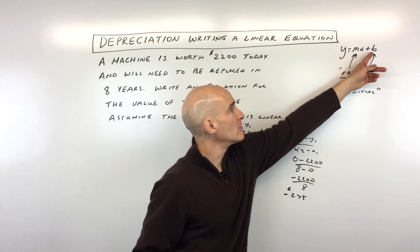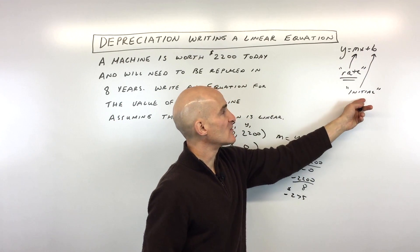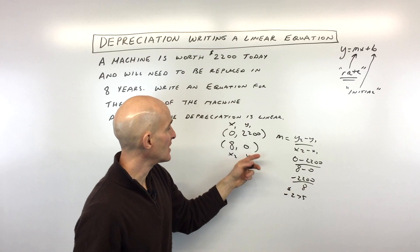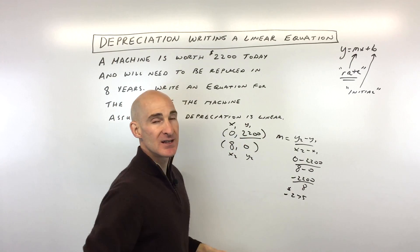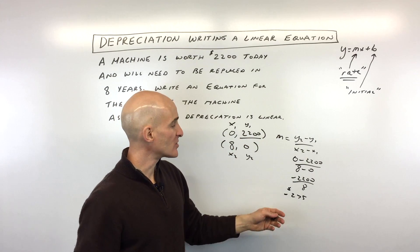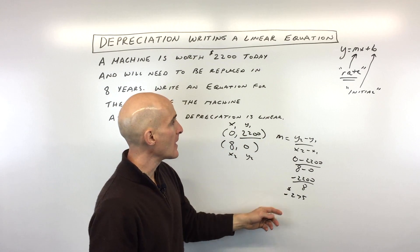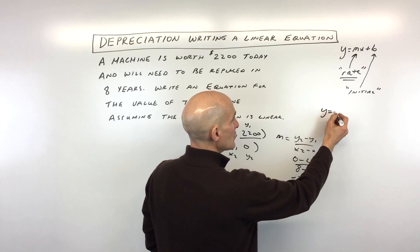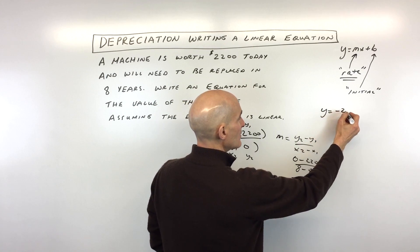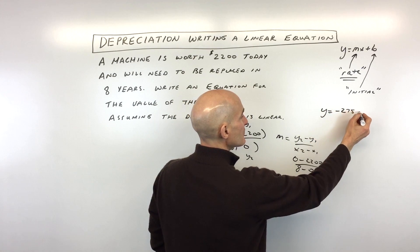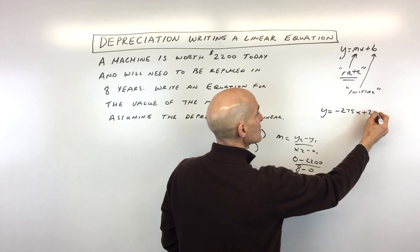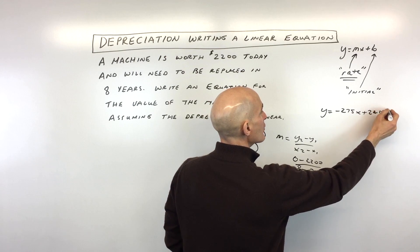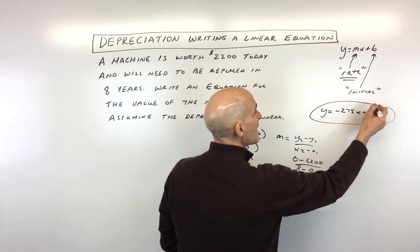The b value, which we said was the y-intercept or initial condition, is $2,200 — that's our starting amount. Putting it all together, we get y equals negative 275x plus 2,200. Now what they might ask us next...